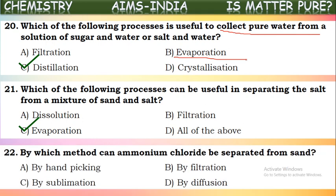By which method can ammonium chloride be separated from sand? Ammonium chloride is a sublimable substance — it converts directly from solid to gas on heating, without passing through the liquid state. This process is called sublimation. So ammonium chloride can be separated from sand by the process of sublimation.